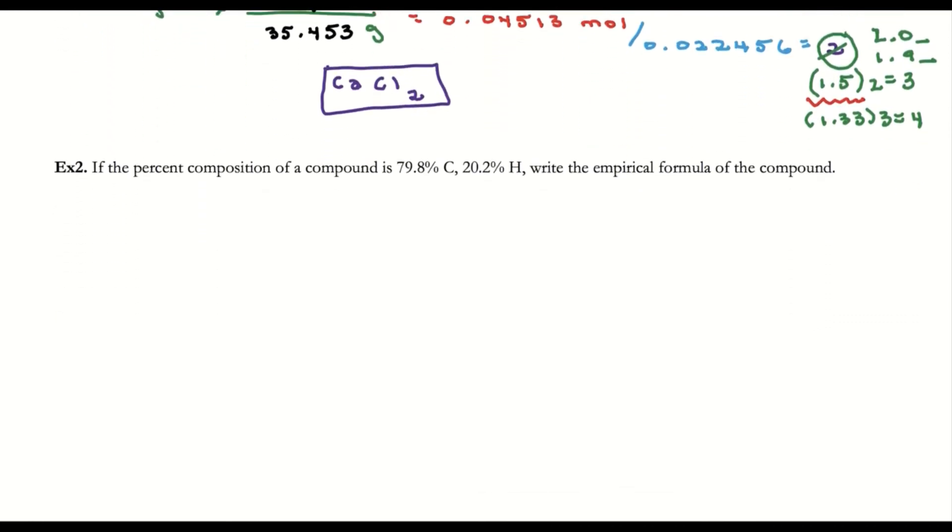For this problem, instead of giving you grams, I give you percents of each element: 79.8% carbon and 20.2% hydrogen. If I assume my sample has a mass of 100 grams, then 79.8% gives me 79.8 grams and 20.2% gives me 20.2 grams.